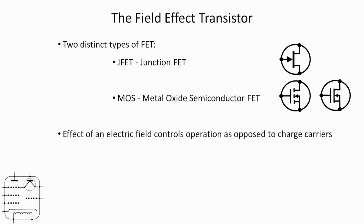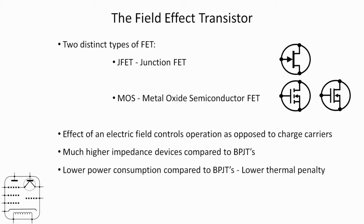The effect of an electric field is what controls operation as opposed to charge carriers, charge carriers being electrons or holes. They've got a much higher impedance compared to bipolar junction transistors, which is very handy for effective buffers or amplifying very low level signals. They've also got lower power consumption and lower thermal penalty, so they don't get quite so warm. With thousands or tens of thousands fabricated onto an integrated circuit substrate, the IC will run cooler and they're physically smaller, making them easy to fabricate on complex ICs.